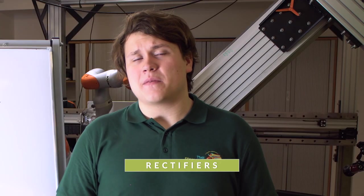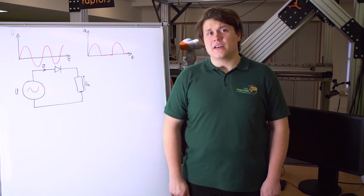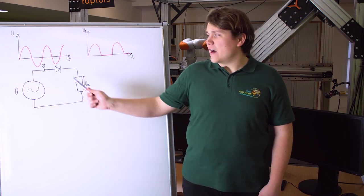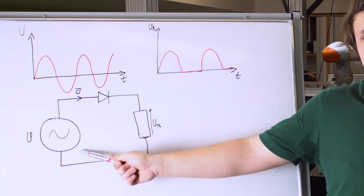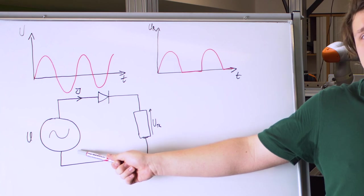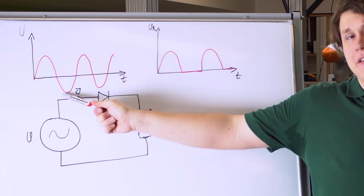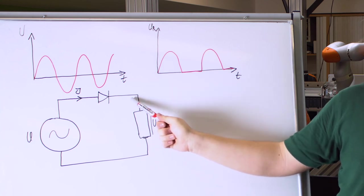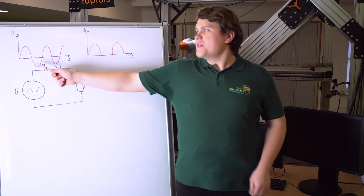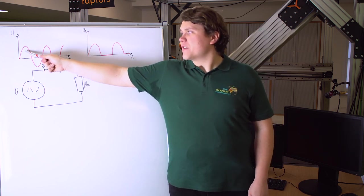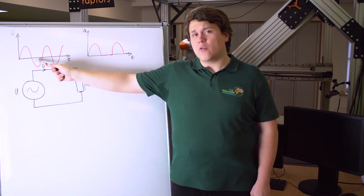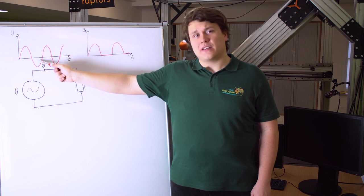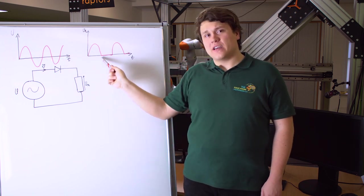Rectifiers are devices made of one or several diodes that allow current to flow only in one direction. With a sinusoidally varying voltage supply, the output shows current flowing only in the positive direction — when voltage goes negative, the diode prevents the negative current from flowing.